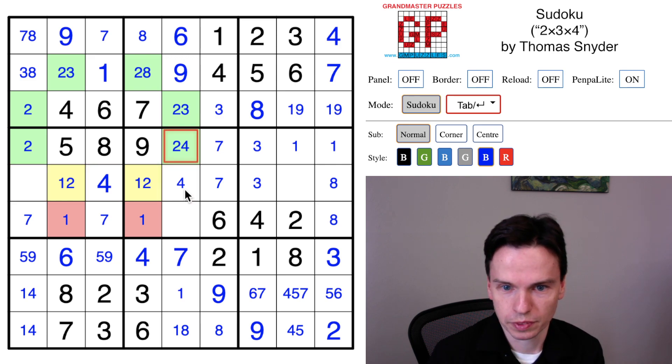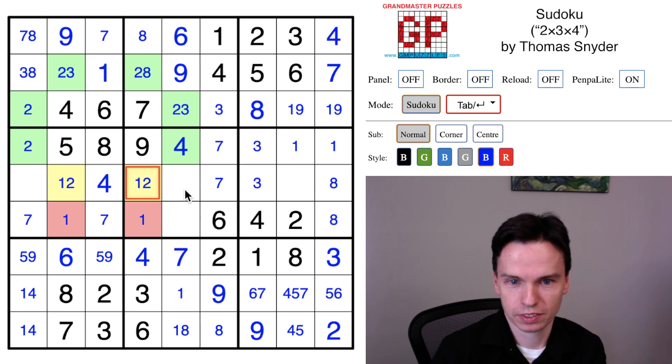Having put in this four note and putting in this four, the four now has to be at top. That means that this is actually where the two must go. And we can get all the twos around the grid quite fast.